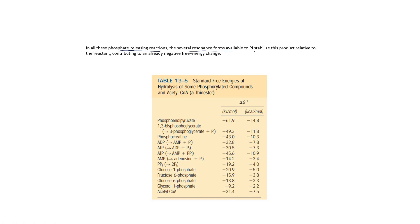Here are some examples. In terms of kilojoules per mole, the standard free energy of hydrolysis of phosphoenol pyruvate is minus 61.9 kJ/mol, and in kilocalories per mole it is minus 14.8 kcal/mol. For 1,3-bisphosphoglycerate, the standard free energy of hydrolysis in kilojoules per mole is minus 49.3 kJ/mol.